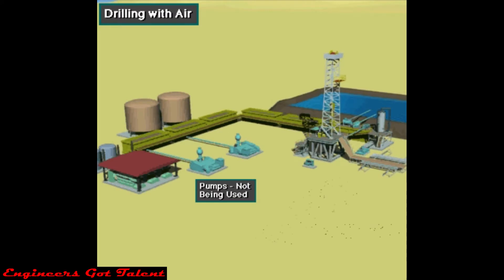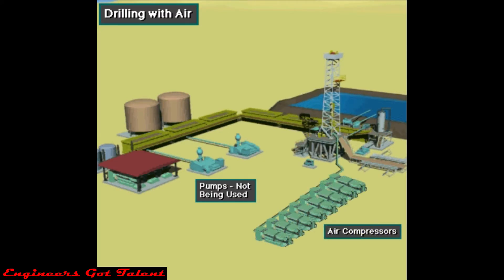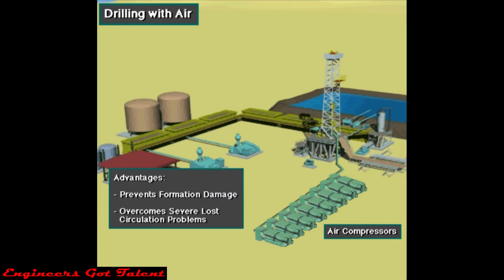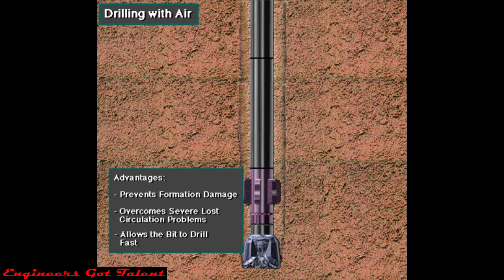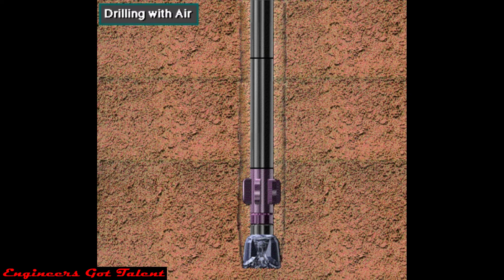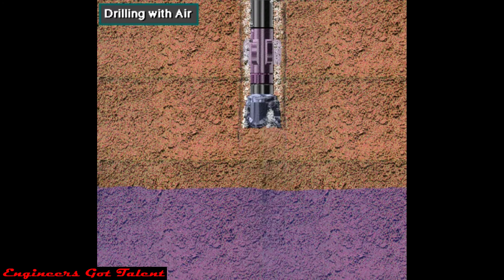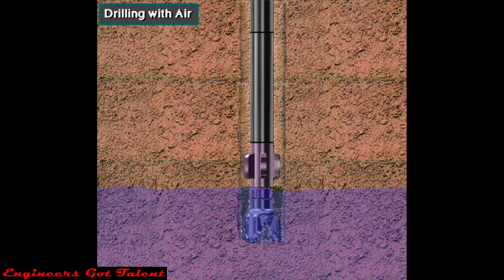Air drilling uses large air compressors instead of mud pumps. Drilling with air or gas can prevent formation damage and can overcome severe lost circulation problems, and it allows the bit to drill very fast. Downhole conditions have to be just right for air or gas to be usable. For example, the bit cannot drill through formations containing large amounts of water — the water mixes with the cuttings in the air or gas and clogs up the hole.